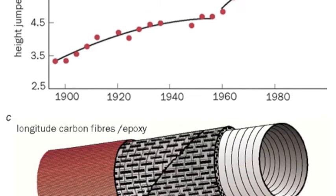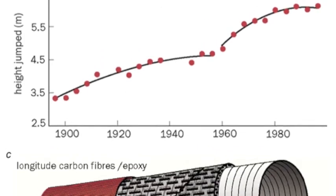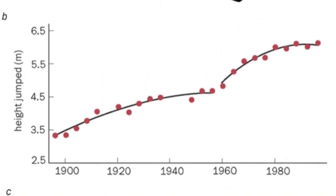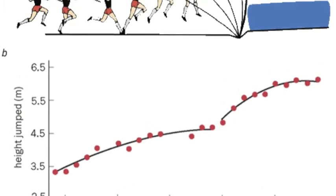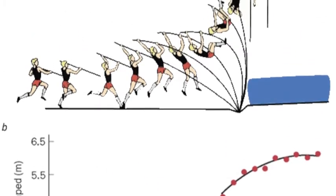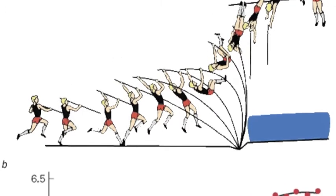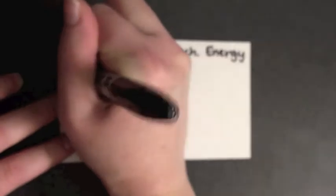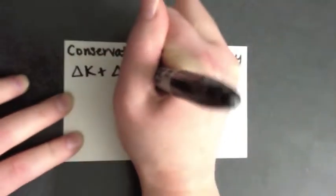Physics has set a height limit for pole vaulting. Sergey Bubka reached 6.14 meters in 1994. There was a change in the limit and therefore the records when pole vaulters began using carbon fiber poles rather than glass fiber or bamboo poles. Again, we can use the conservation of mechanical energy.